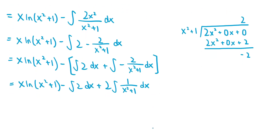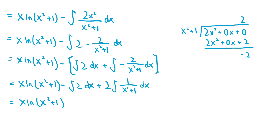The last thing we need to do is evaluate both integrals separately. The x·ln(x² + 1) stays the same. The integral of 2 is 2x, so we write minus 2x. The integral of 1 over (x² + 1) is arctan(x), which is a standard integral, and that's being multiplied by 2, so we add plus 2·arctan(x). And we also add a constant C. So the integral of ln(x² + 1) is x·ln(x² + 1) minus 2x plus 2·arctan(x) plus C.